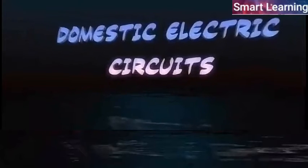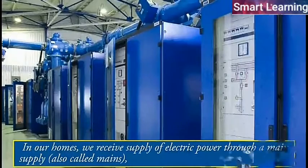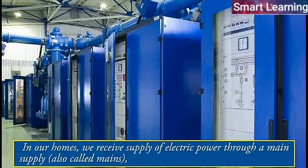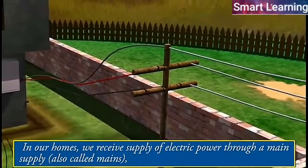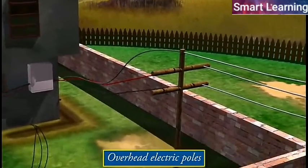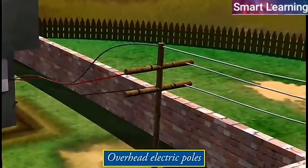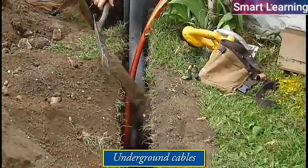Domestic electric circuits. In our homes, we receive supply of electric power through a main supply, also called mains, either supported through overhead electric poles or by underground cables.